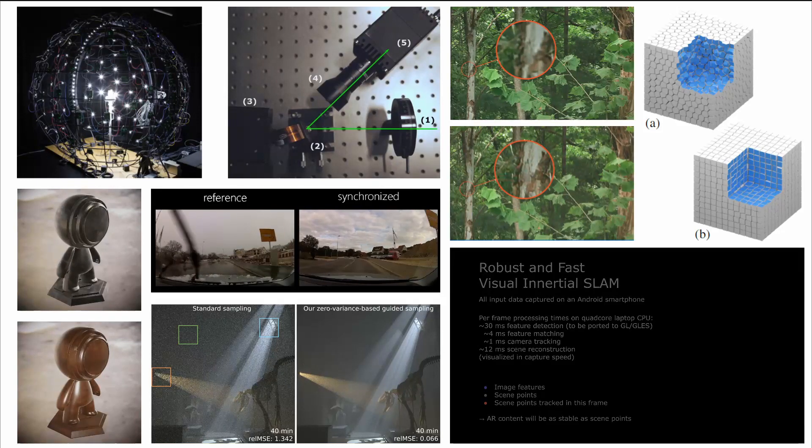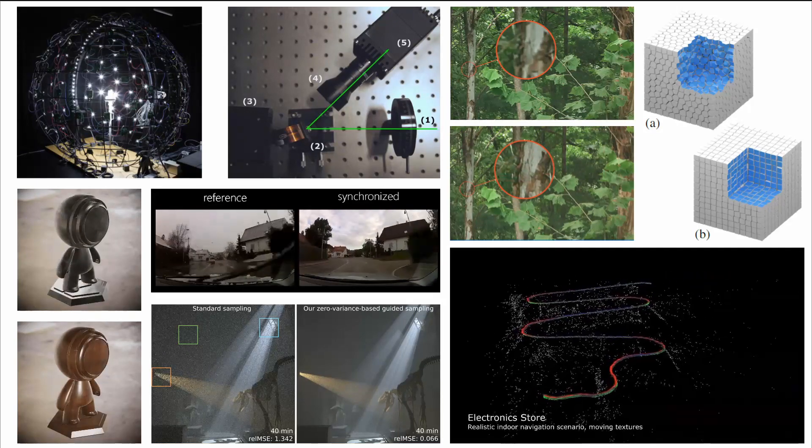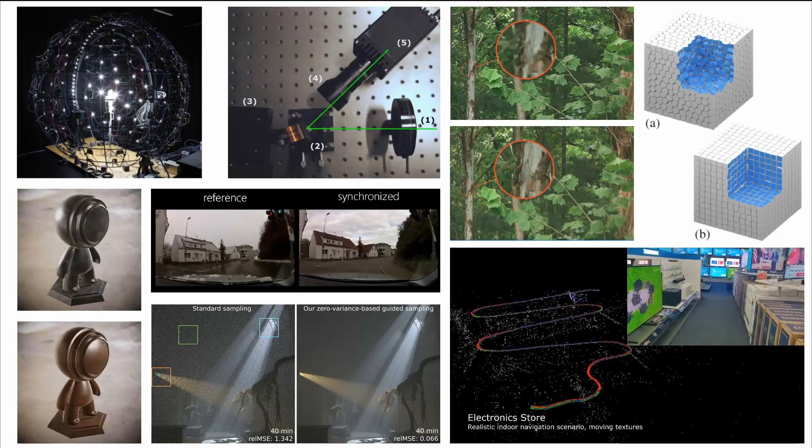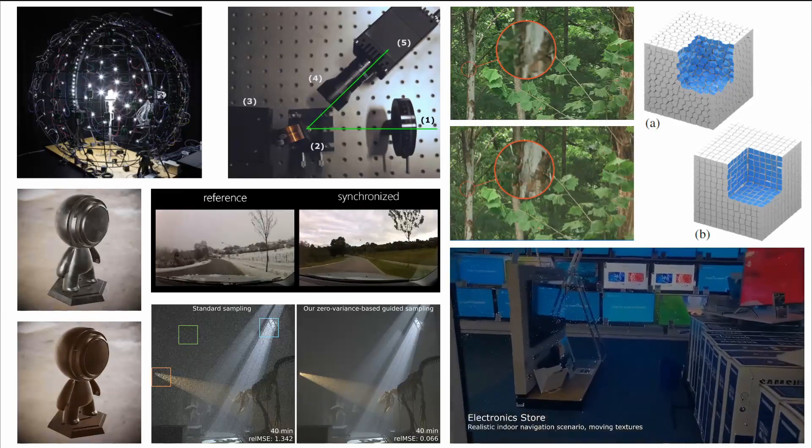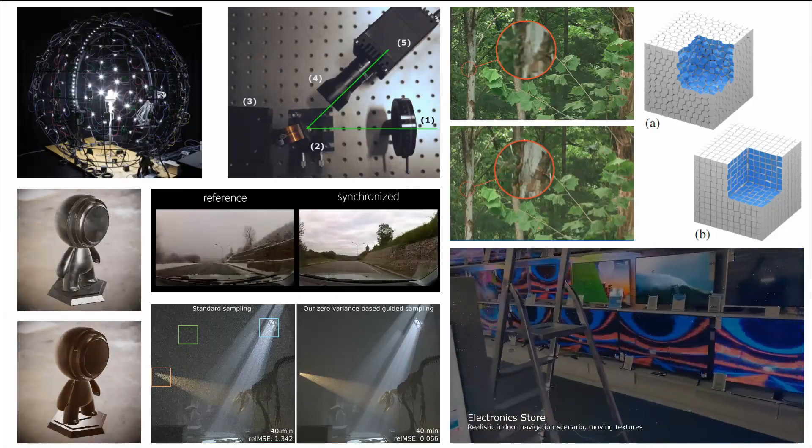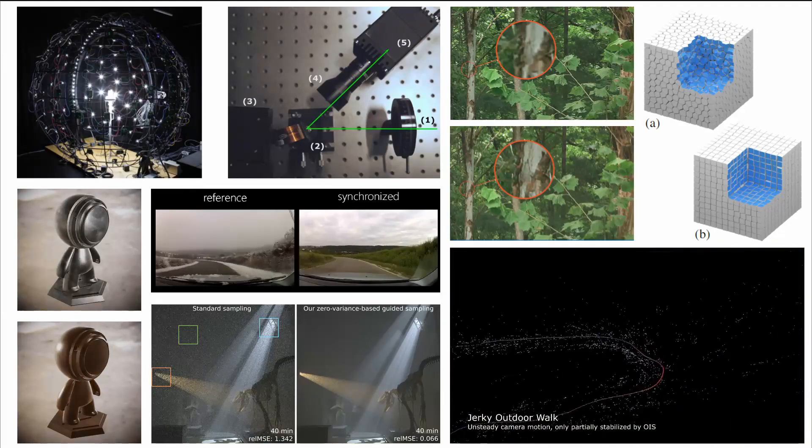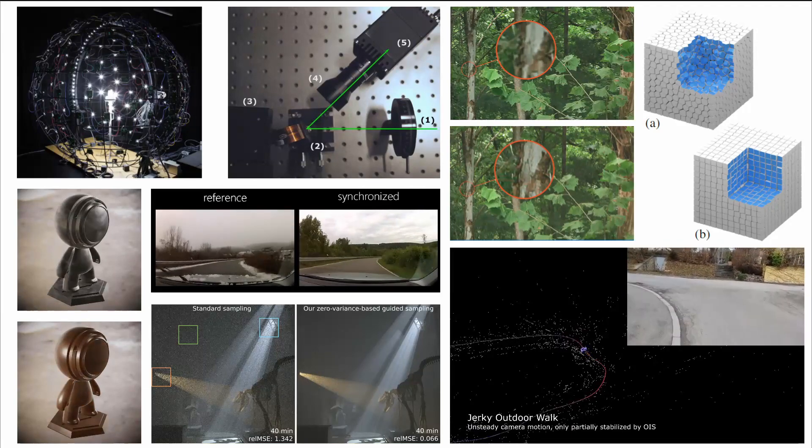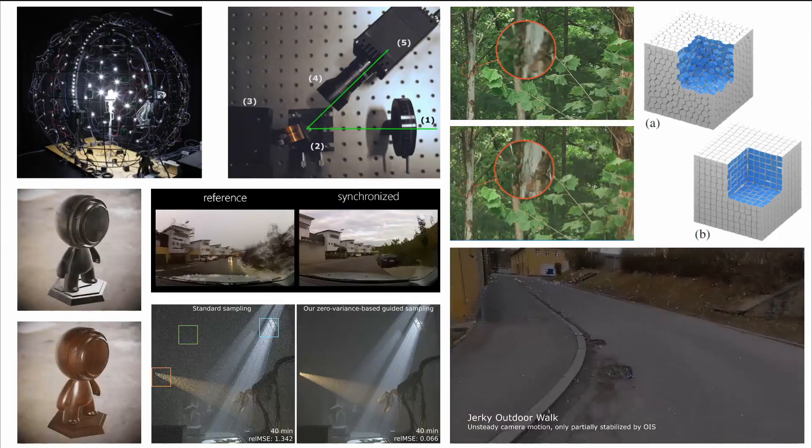We further deal with image processing algorithms. For example, the two images which you see here, where we try to increase the reconstructed detail from video sources. Or we are dealing with synchronizing videos, as you can see here. These street videos were captured at totally different seasons and weather conditions, and we still are able to precisely synchronize them in time.